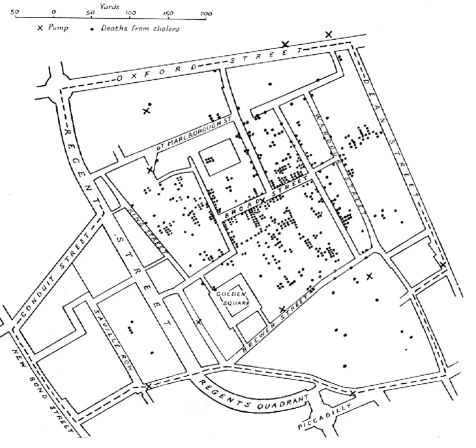Vector-based GIS is typically related to operations such as map overlay, combining two or more maps or map layers according to predefined rules, simple buffering identifying regions of a map within a specified distance of one or more features such as towns, roads or rivers, and similar basic operations. This reflects the use of the term spatial analysis within the Open Geospatial Consortium.